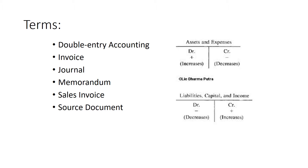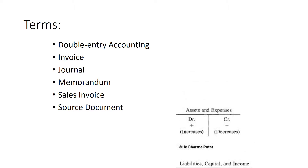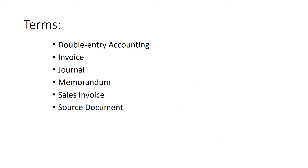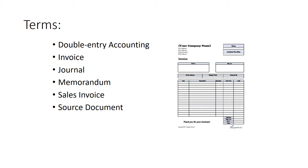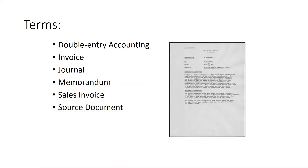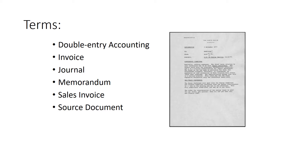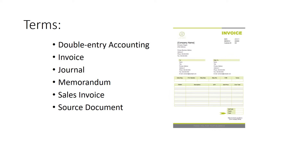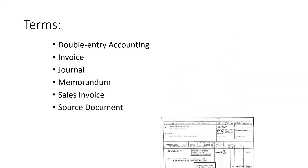Some other terms we'll talk about: we'll start learning about source documents, which basically allows us to have objective evidence for the transaction. One of them is an invoice — that's when we buy on account and receive an invoice. Once we have our transactions, we place them into a journal using a multi-column journal with special amount columns. A memorandum is used when there is no other source document. A sales invoice is when we sell on account. Those are our source documents.